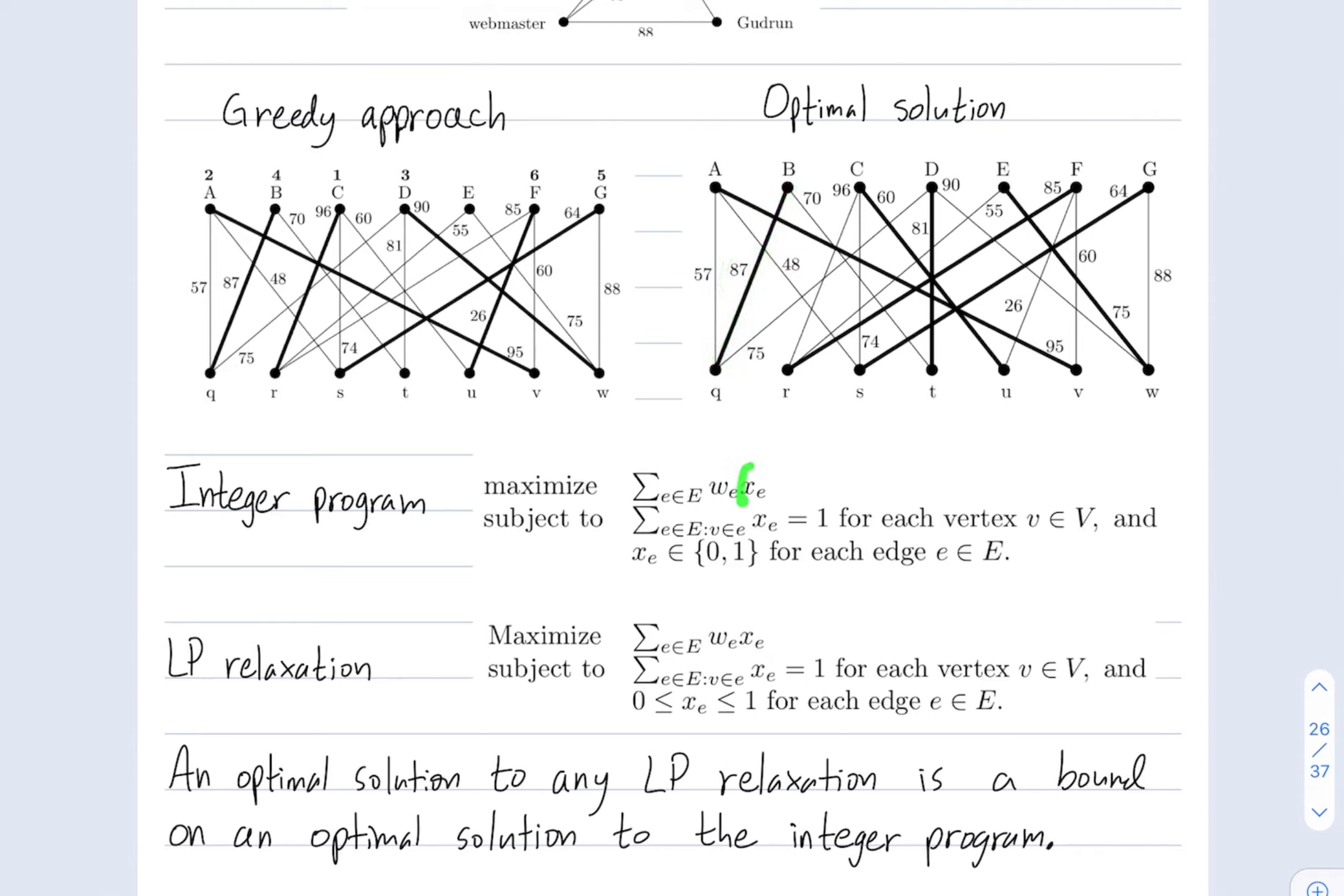XE is going to be our variable that encodes whether an edge is included or not. So, each edge is either included, that's represented by a 1, or not included, that's represented by a 0. So, this is indeed what we're trying to maximize, the sum of the weights of all the included edges.